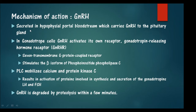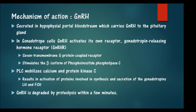The secreted GnRH is carried by the hypophyseal portal bloodstream into the pituitary gland, where it activates the pituitary to release LH and FSH. It has a receptor called GnRHR, the gonadotropin releasing hormone receptor, which is a G protein coupled receptor, and its mechanism of action is through phospholipase C.